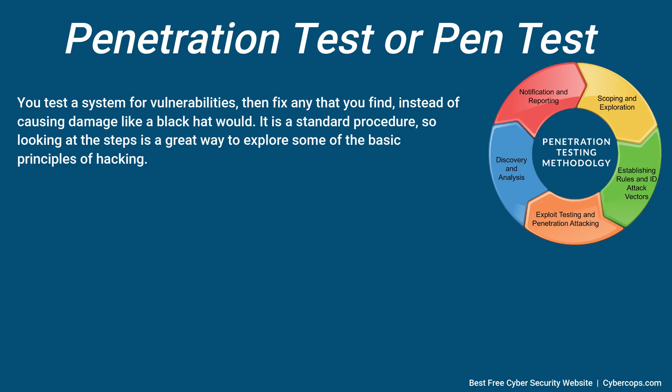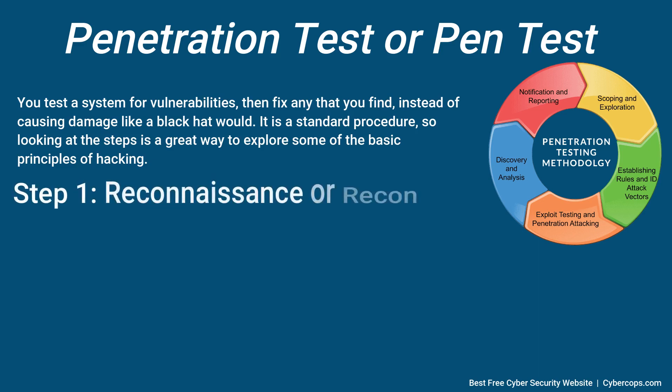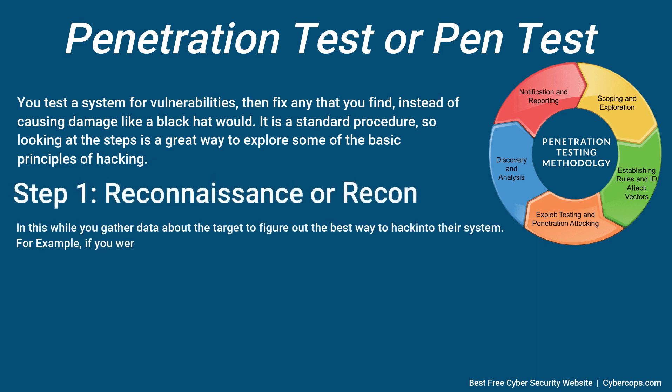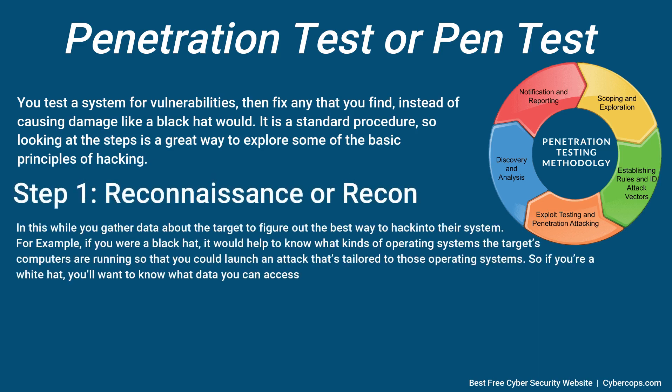Usually, the first step in a pen test is reconnaissance, or recon. In this phase, you gather data about the target to figure out the best way to hack into their system. For example, if you were a black hat, it would help to know what kinds of operating systems the target's computers are running so that you could launch an attack tailored to those operating systems.